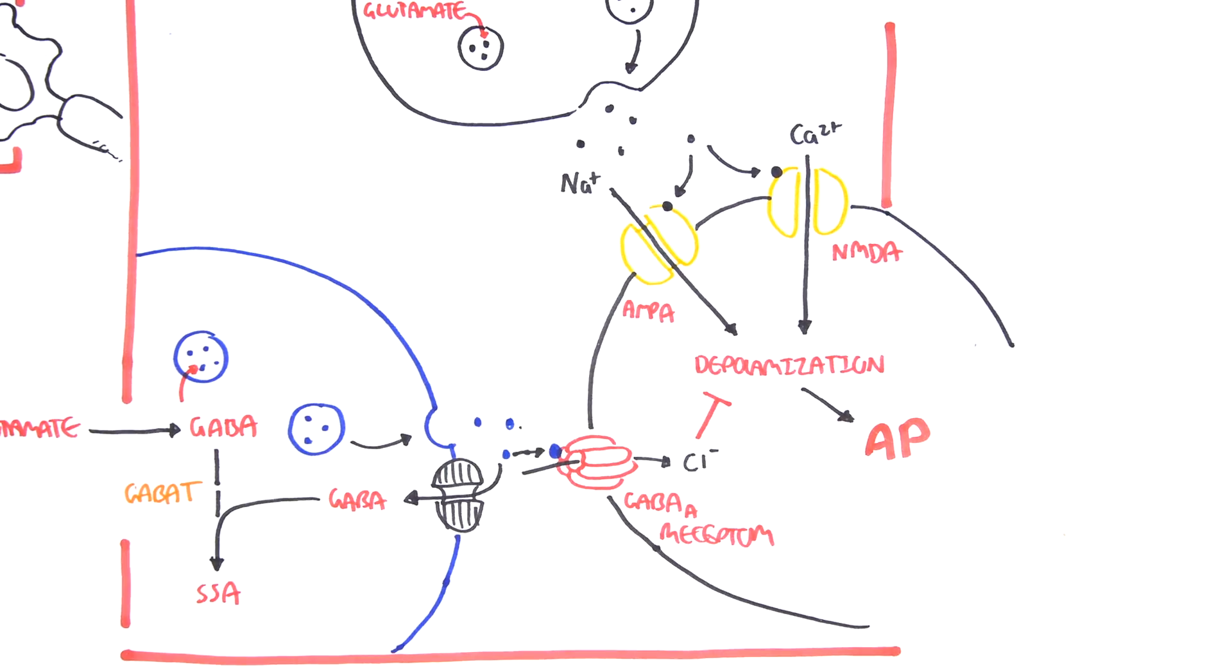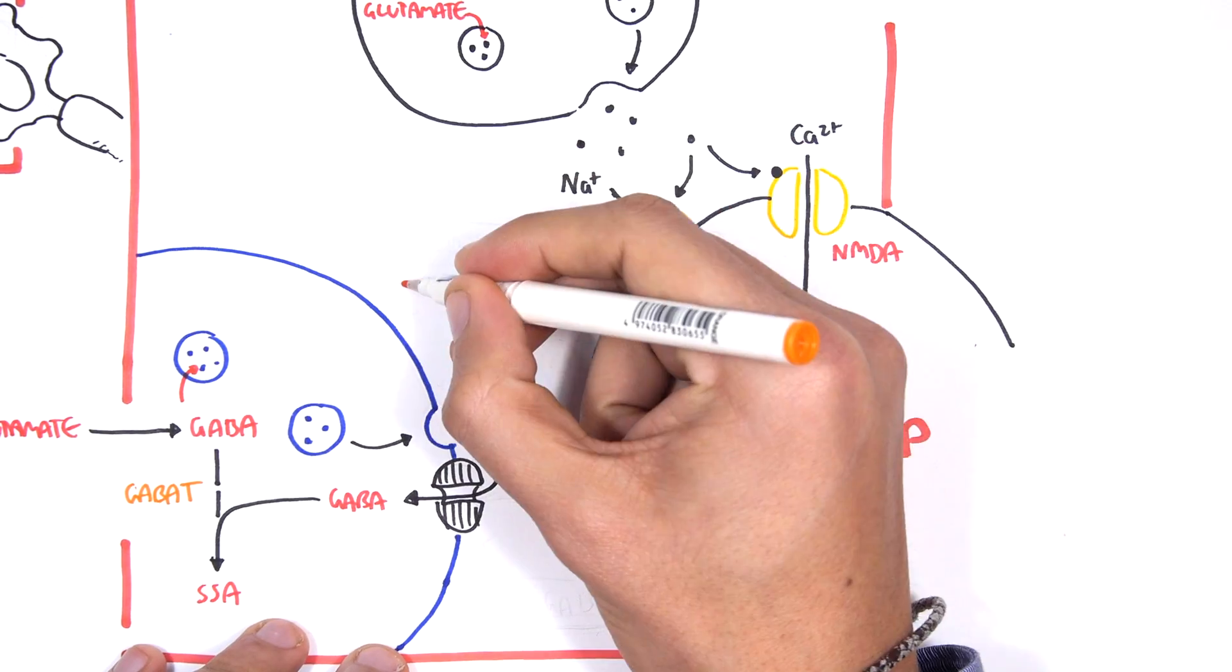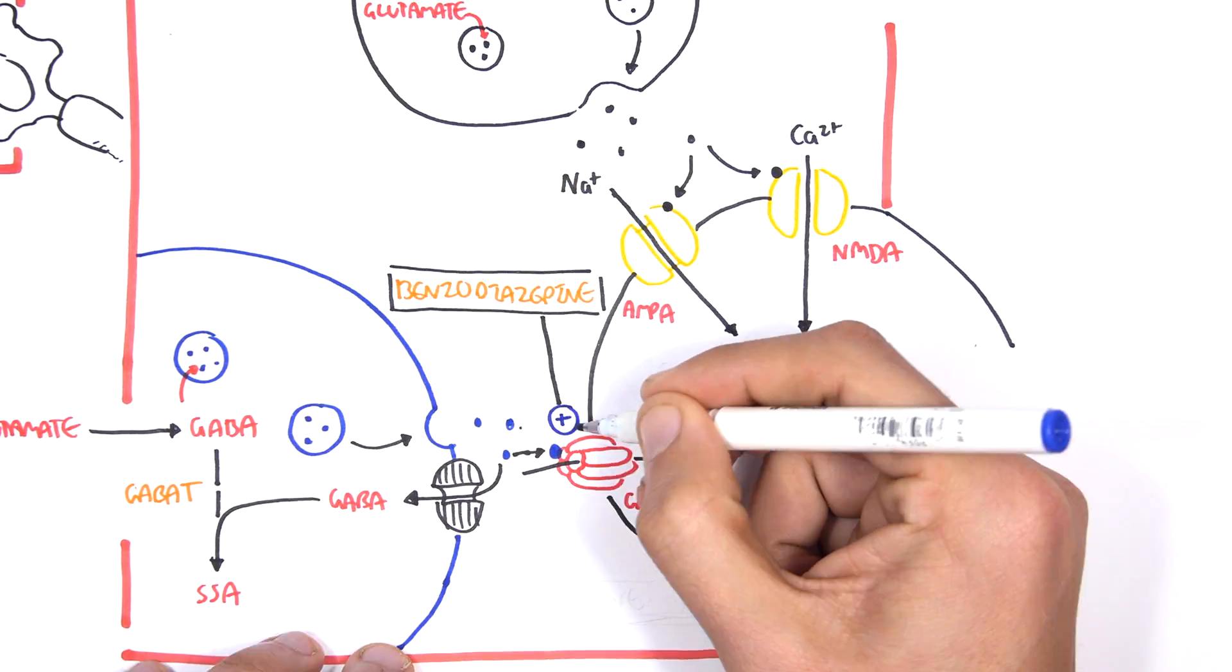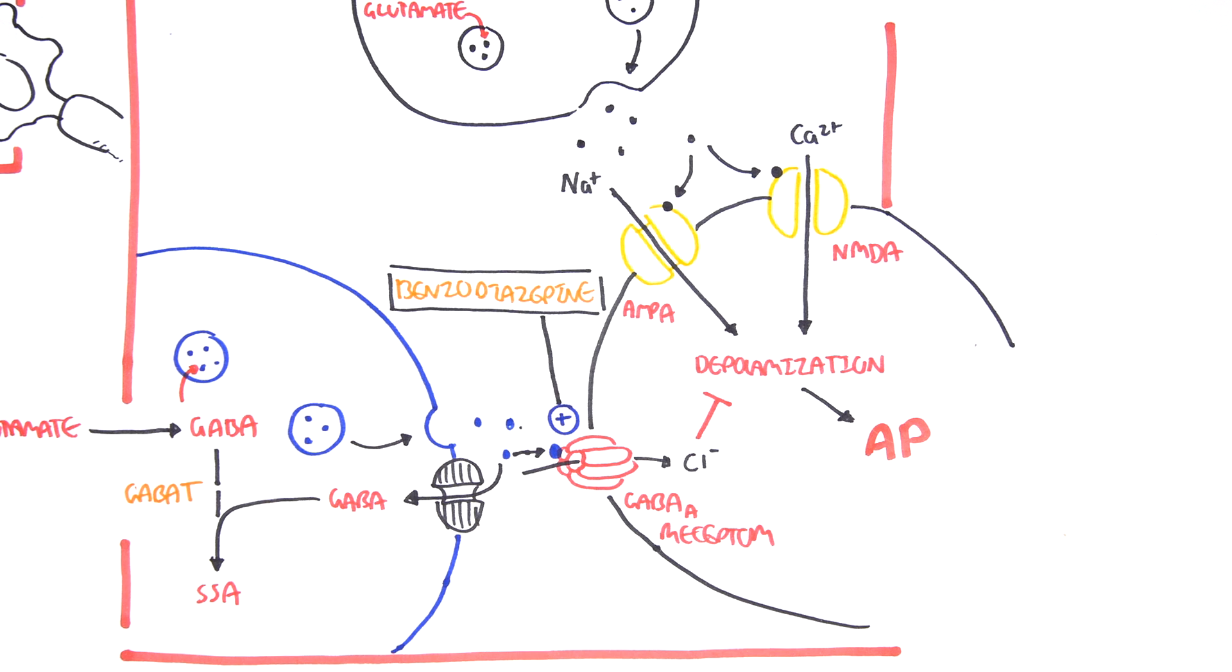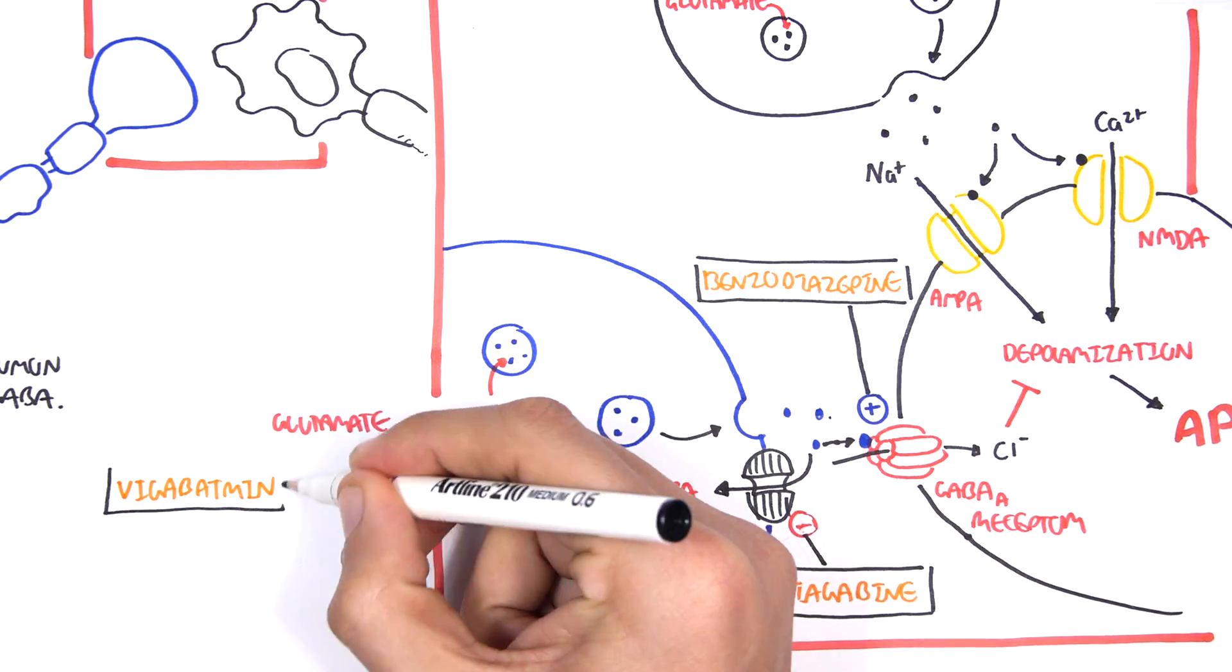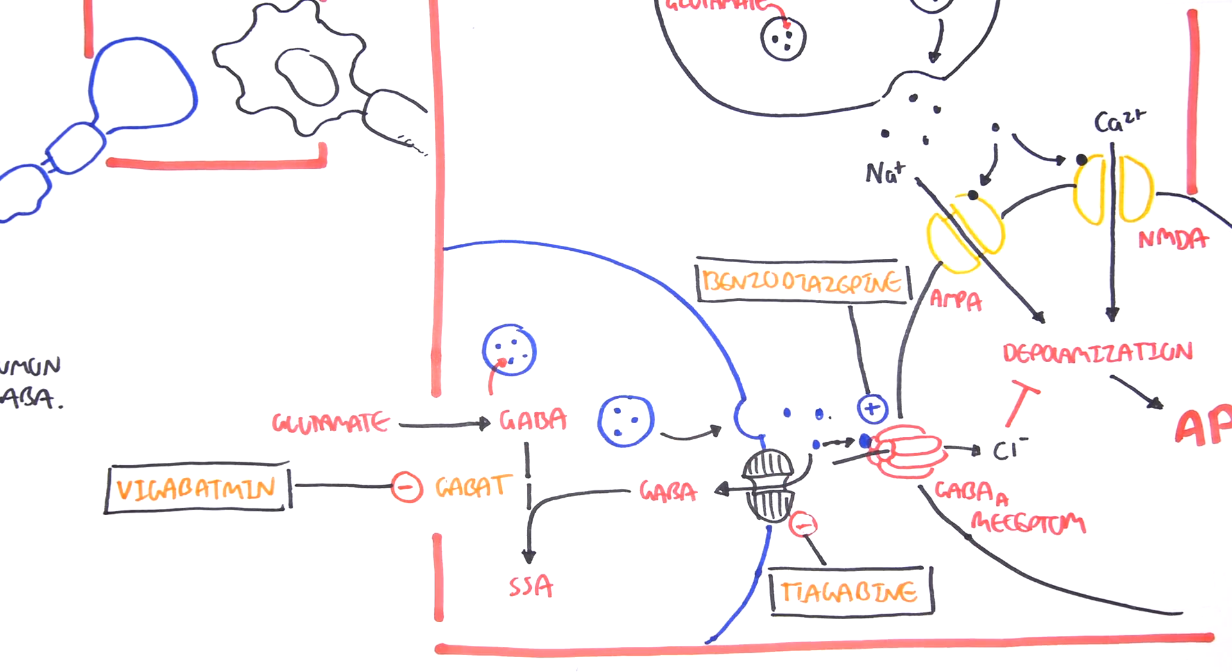Benzodiazepines stimulate this receptor channel activity, resulting in more GABA activity which inhibits depolarization. Tiagabine inhibits the reuptake of GABA, resulting in more GABA activity in the synaptic cleft. Vigabatrin inhibits the GABA transaminase enzyme, resulting in more GABA being available in the synaptic cleft.